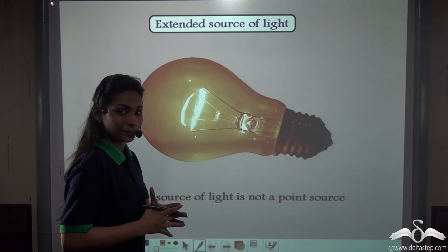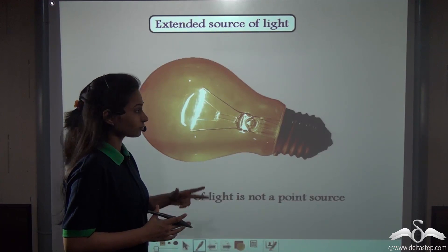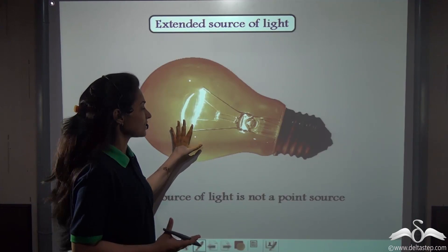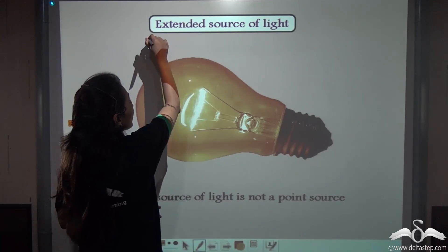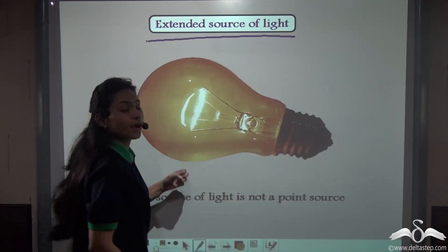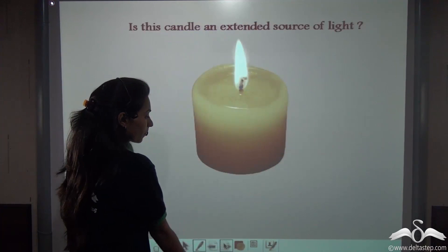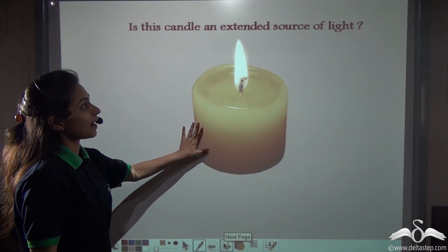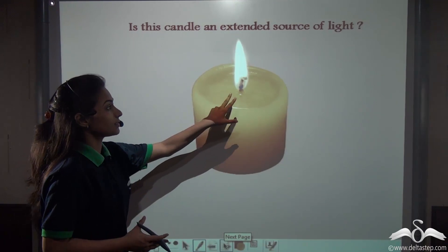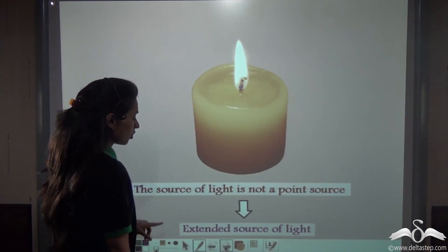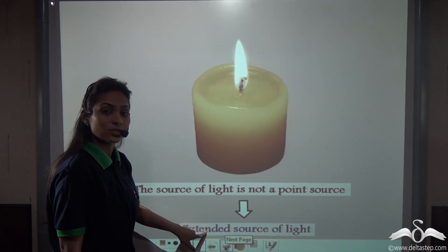Do you know what a point source of light is? Can you tell me if this bulb is a point source of light or not? We can all see that this bulb is not a point source of light, so it will be called an extended source of light. An extended source of light is any source that is not a point source. Is this candle an extended source of light? You can see that it is not a point source of light, so it will be known as an extended source of light.